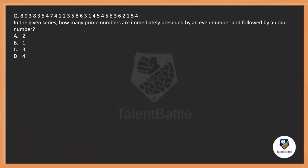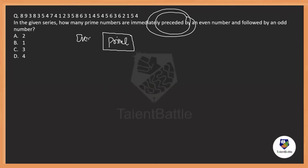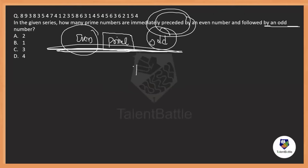In a given series, how many prime numbers are there which are immediately preceded by an even number and followed by an odd number? So we need prime numbers where the number before is even and the number after is odd — like: even number, prime number, odd number. How many times does that happen in the series?